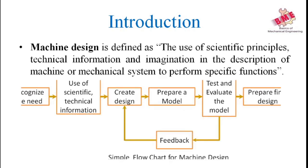The figure shows a flowchart. From the flowchart, we see that the first box is recognition of need — for what use the product or machine is to be manufactured, we have to recognize the need of that product. After that, we apply scientific principles, technical information, and also consider which material is to be used for manufacturing that product, the behavior of that material, and the theory of stresses applied during use of that product. After applying those principles, we create a design.